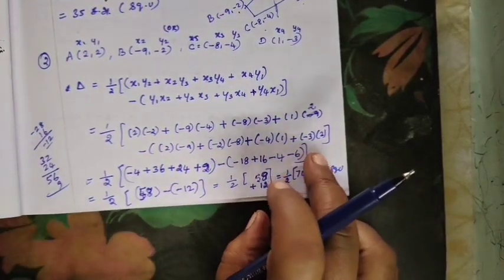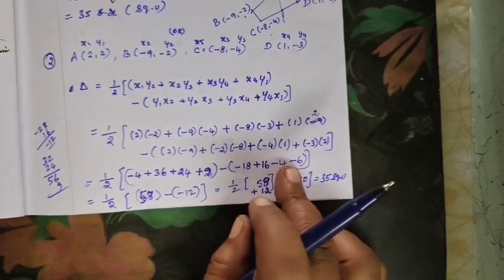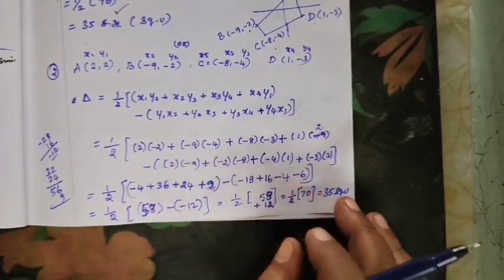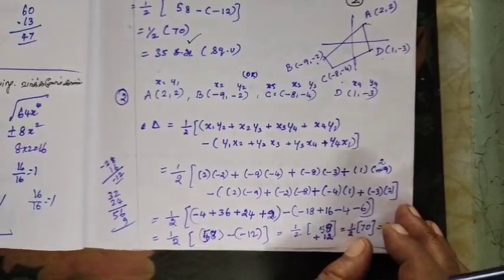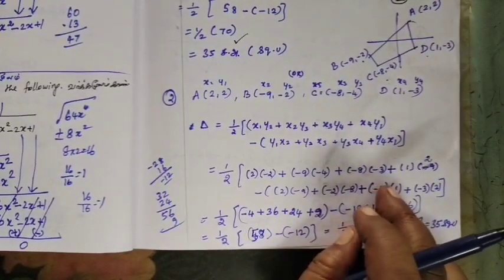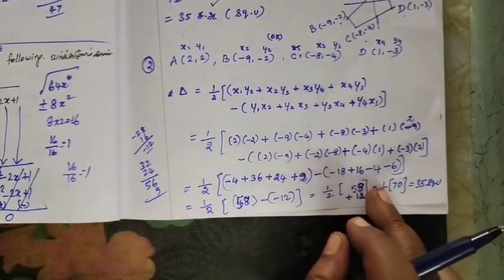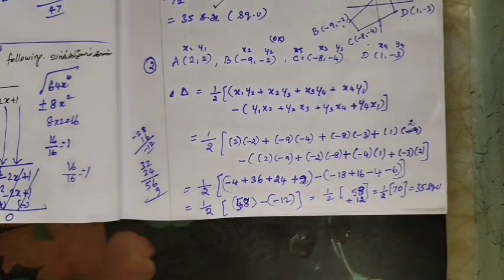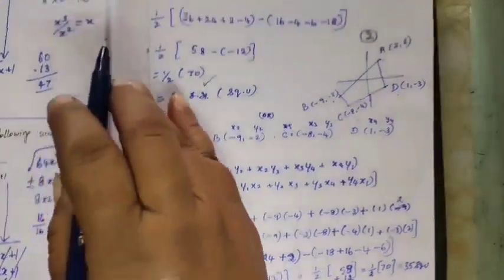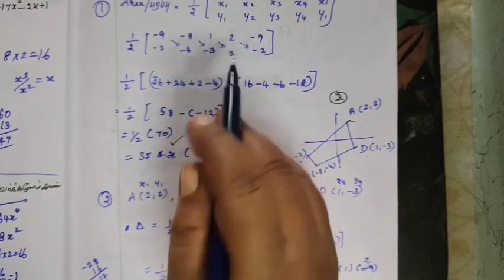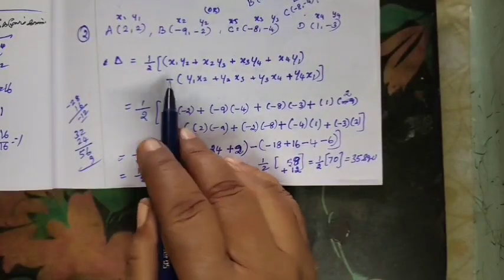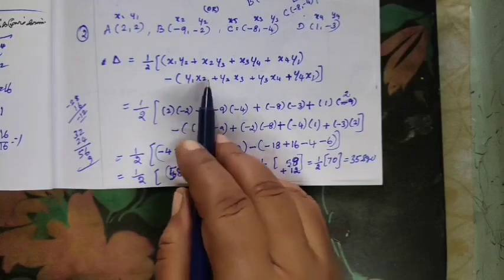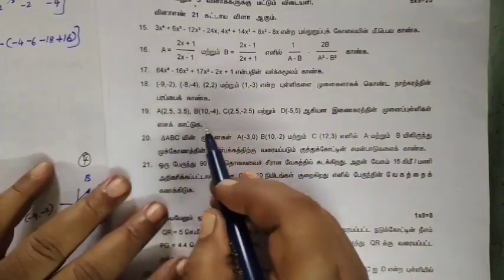If you have a question, please write A, B, C, D. That is the answer. You can do the work out. If you have to write a question, we will read it in the exam. I will read this in the description box.